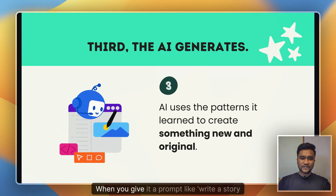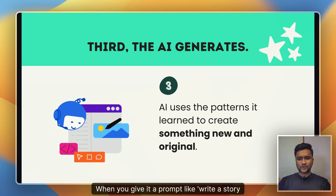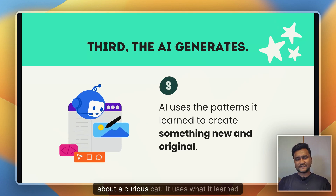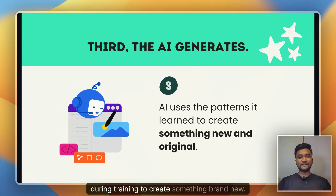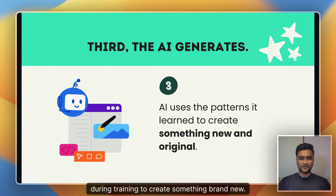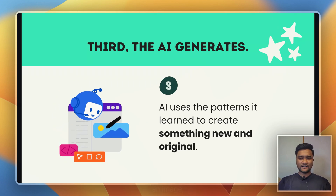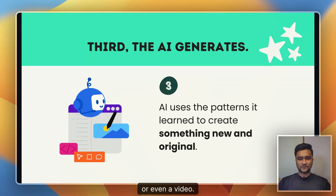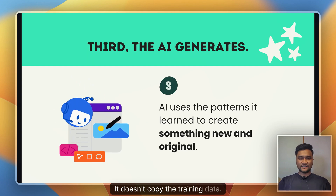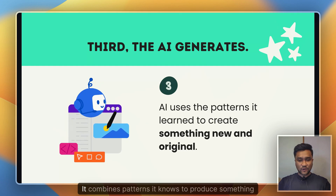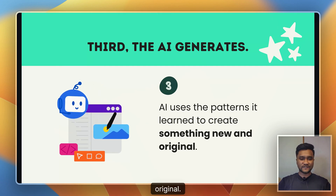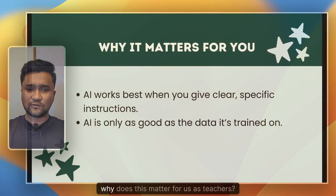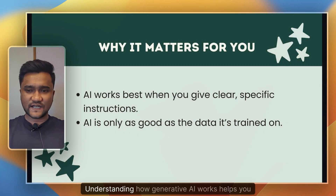In the third and final step, the AI generates new content. When you give it a prompt like 'write a story about a curious cat,' it uses what it learned during training to create something brand new — a story, an image, or even a video. It doesn't copy the training data; it combines patterns it knows to produce something original.